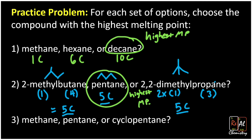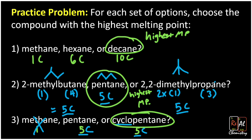Last up: which has the highest melting point — methane, pentane, or cyclopentane? Methane has one carbon, pentane has five, and cyclopentane also has five. Methane loses out immediately due to its low carbon count. Pentane and cyclopentane tie at five carbons, so the cyclo prefix becomes our tiebreaker. Cyclic compounds have higher melting points and boiling points, so cyclopentane has the highest melting point. That's how you think through the melting points and boiling points of alkanes based on their structures.